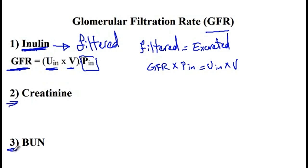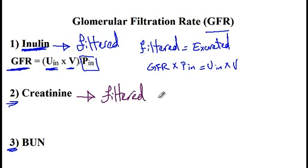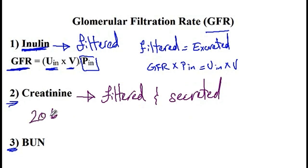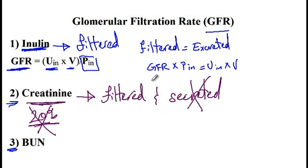Instead you can use creatinine and blood urea nitrogen, which are normally present in the blood as indicators of GFR. Creatinine is a breakdown product of creatine found in muscles, and it is freely filtered and also secreted in the renal tubules — it is not reabsorbed. Therefore the amount of creatinine excreted in the urine is about 20% higher than the GFR, but measurement technique errors cancel out the secreted amount, so creatinine gives an accurate estimation of GFR.